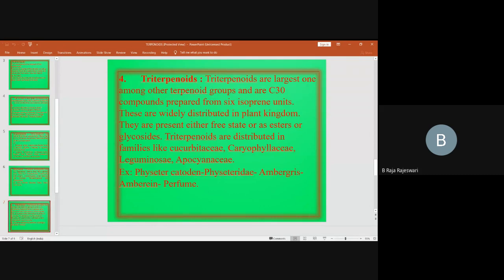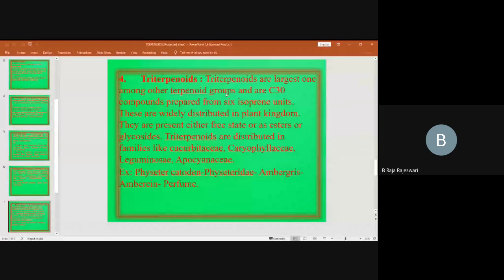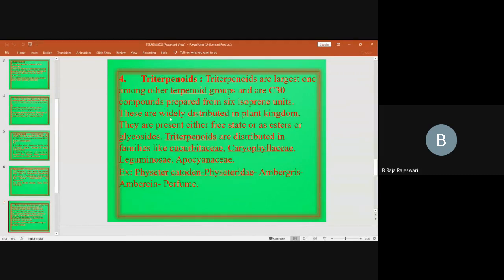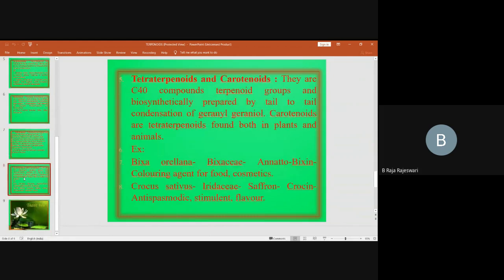Triterpenoids are the largest among other terpenoid groups and are C30 compounds, prepared from six isoprene units. These are widely distributed in the plant kingdom. They are present in either free state or as ester or glycosides. Triterpenoids are distributed in families like Cucurbitaceae, Caryophyllaceae, Cucuminaceae, Apocyanaceae. Physeter, cathodine, physeterodyne, ambergris.